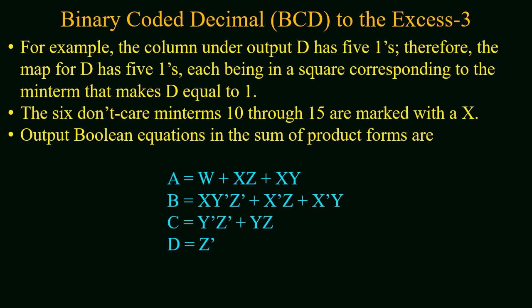Note that while marking ones you have to consider one output variable per K-map. For example, the column under output D has 5 ones, therefore the map of D has 5 ones, each being in a square corresponding to the min term that makes D equal to 1. Importantly, the 6 don't care min terms from 10 to 15 are marked with a cross or X. By using the rules of K-map and solving for each individual output variable, we will have 4 output equations in the standard sum-of-products form.